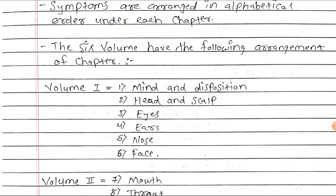Volume 1 contains: 1st — mind and disposition, 2nd — head and scalp, 3rd — eyes, 4th — ears, 5th — nose, and 6th — face.